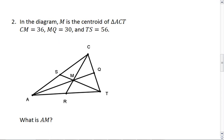Again, we have a centroid problem. In the diagram, M is the centroid of triangle ACT. We're told that CM is 36, MQ is 30, and TS is 56.